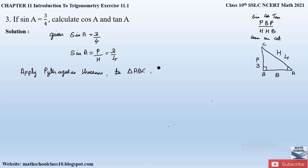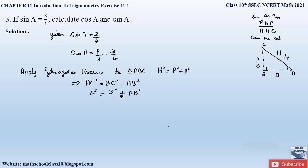According to the Pythagorean theorem, hypotenuse squared equals perpendicular squared plus base squared. So AC² = BC² + AB². AC² = 4², BC² = 3², and we need to find AB². Sending 3² to the left-hand side: AB² = 4² − 3² = 16 − 9 = 7. Therefore AB = √7. So our base value is √7.